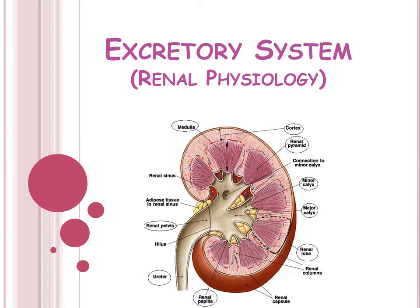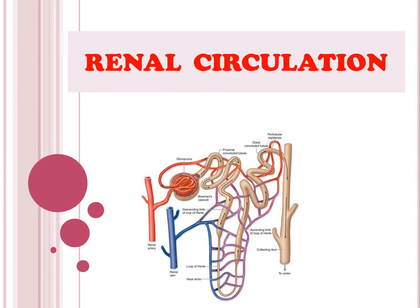Good morning friends, let's continue with the lectures of the excretory system, that is renal physiology. In the previous lecture, the first lecture of this renal physiology, I taught you about the basic anatomy of the kidney including the nephron and the juxtaglomerular apparatus. The topic for today's lecture is renal circulation, that is renal blood flow or the blood supply to the kidney.